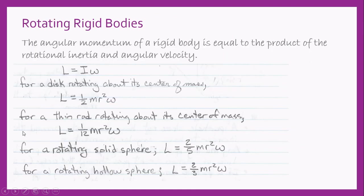Let's move on and look at rotating rigid bodies. As with rotating particles, the angular momentum of rotating rigid bodies is also equal to the product of the rotational inertia and the angular velocity. For a disk rotating about its center of mass, we take the expression for its rotational inertia and multiply it by its angular velocity. We do the same for all other shapes.